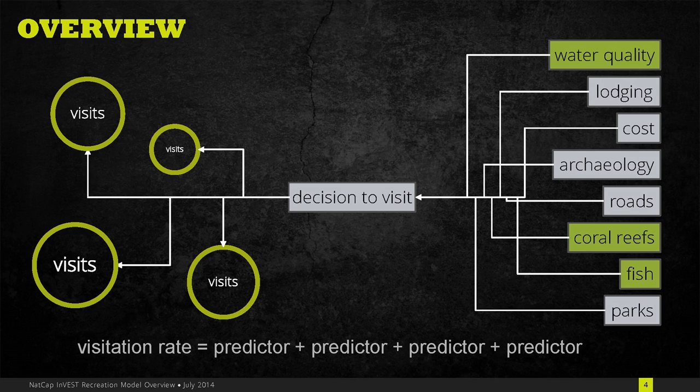Typically the way people model these decisions is with a linear regression where these predictors—things like water quality, access, or the safety of a place—are used as predictors of the number of visits to each place.